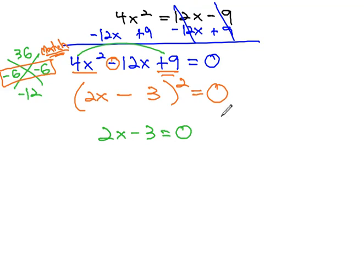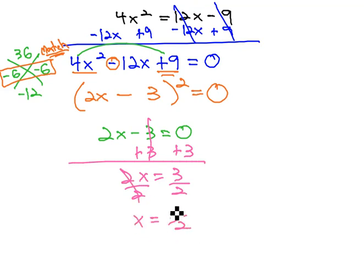We can quickly find this one solution by adding 3 to both sides, giving us 2x equals 3, and dividing both sides by 2 to get x equals 3 halves.